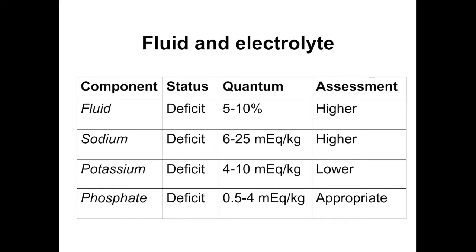The phosphorus deficit is quite significant and may cause lactic acidosis by reducing oxygen delivery capacity. Very severe phosphorus deficit can result in rhabdomyolysis, which can further trigger renal failure — a challenging condition in the context of DKA management.